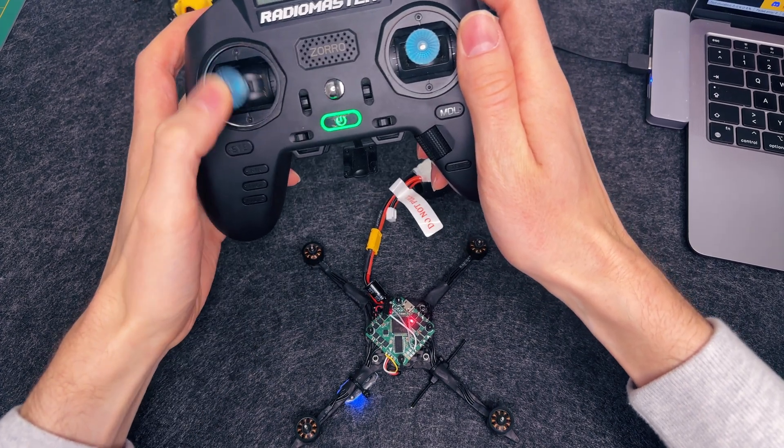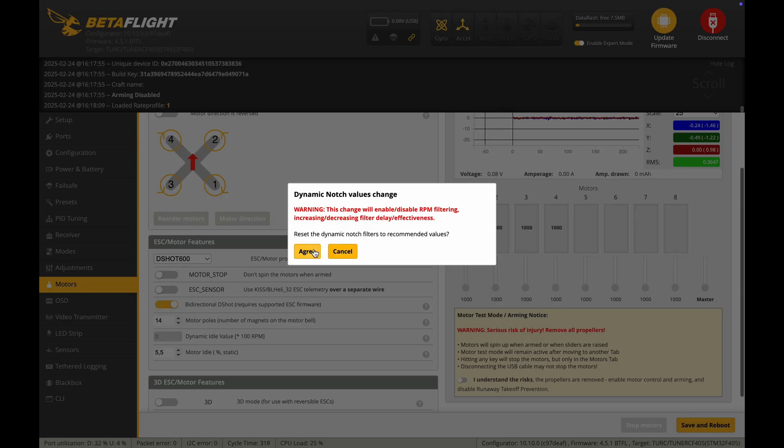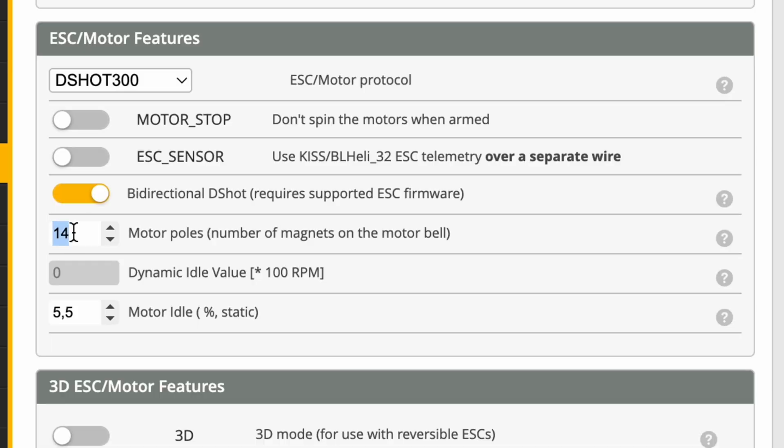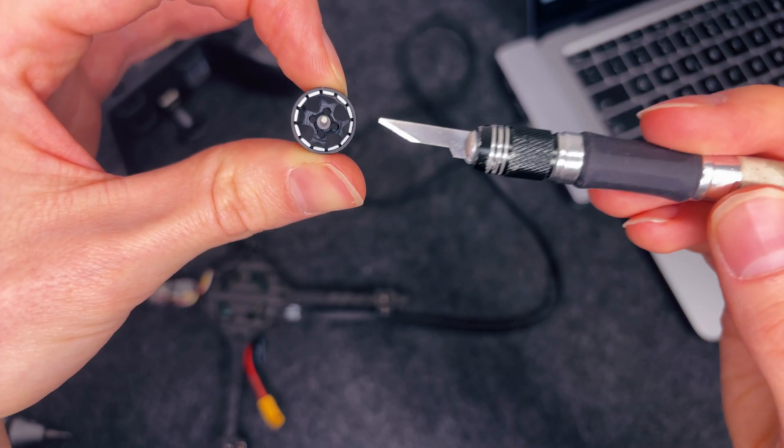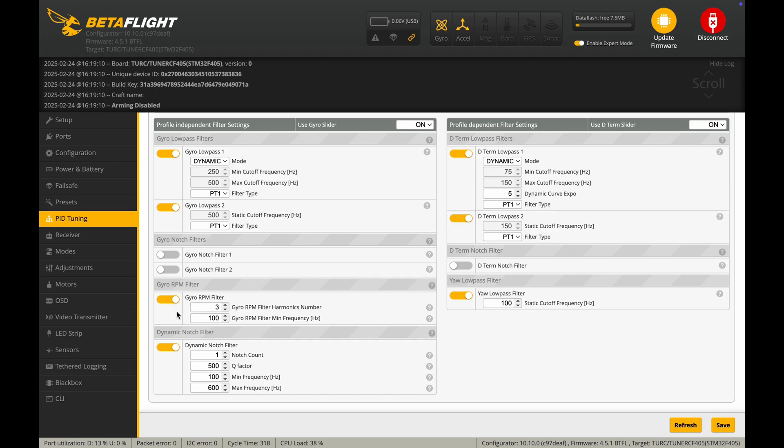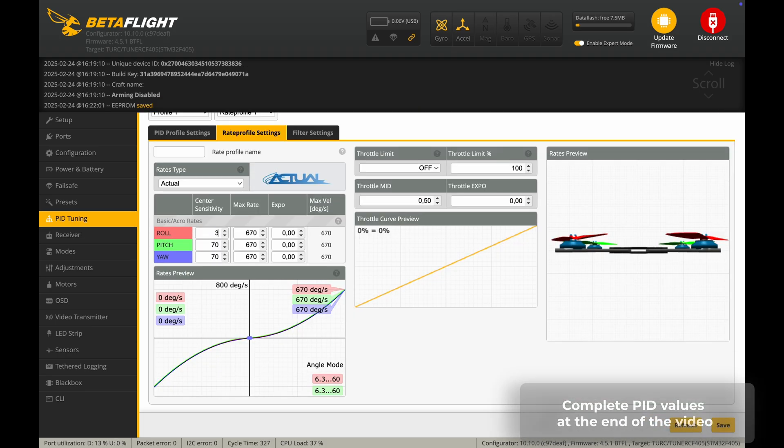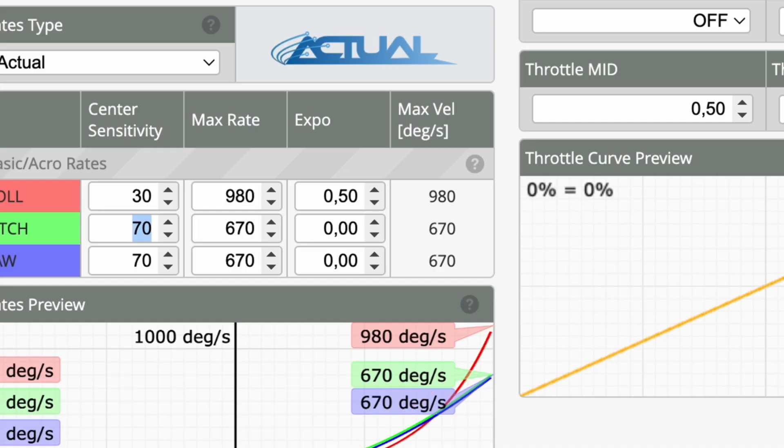And finally, the PID tune. No deep dives. No endless tweaking. Just the essentials. First, enable D-shot and RPM filtering. Second, enter your motor's magnet count. Not sure? Just count them. Third, use the master multiplier slider. I usually bump it up to 1.3 max for the first flight. Oh, and before we wrap up, I'll give you a quick look at my rates.